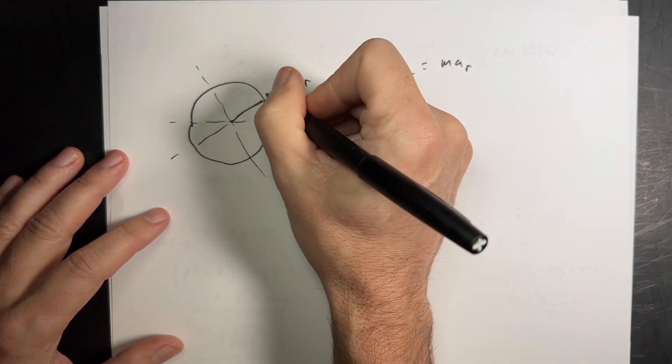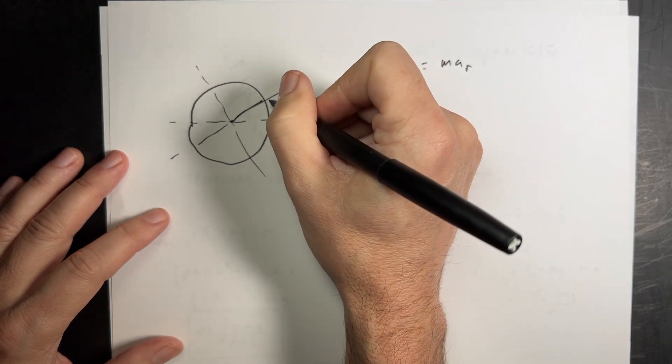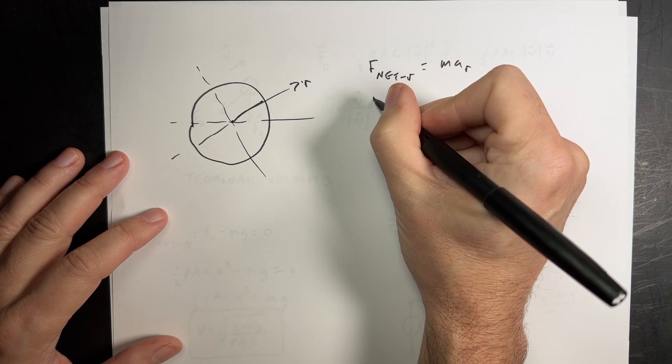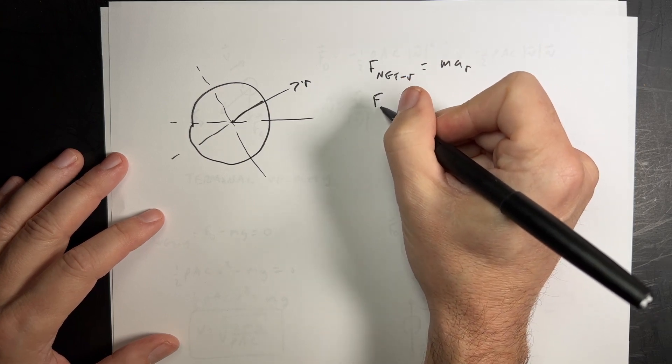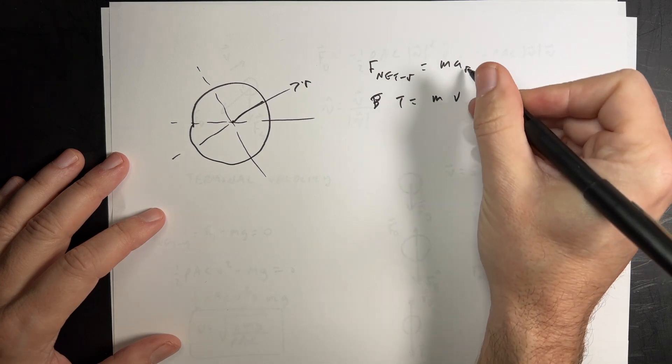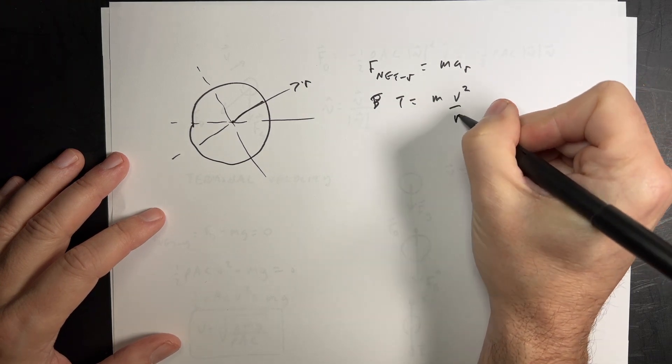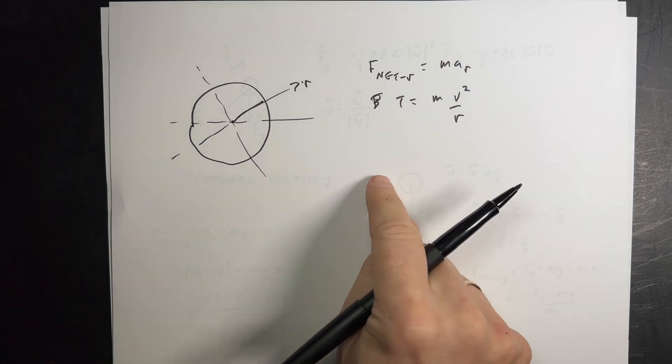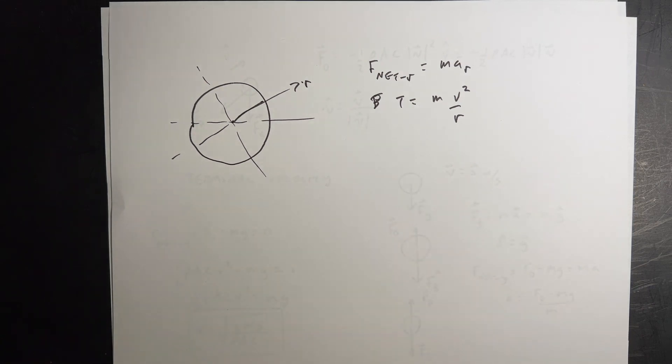So you could have, let's say, any number of forces moving, pushing that way. Let's just call that F. It's a tension. Let's say it's a tension. T equals M. And then the acceleration of an object moving in circles, V squared over R. And you can solve for all sorts of problems. I don't think there's any really new physics that we didn't talk about in the last chapter. It's just practicing a bunch of problems.